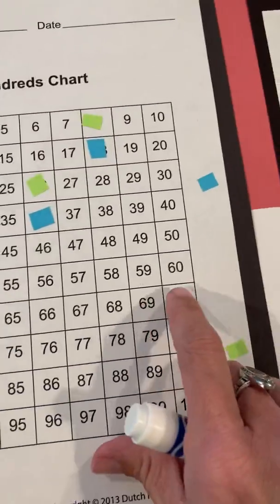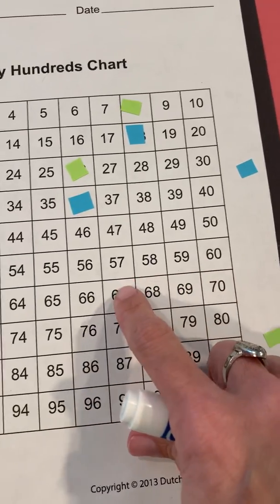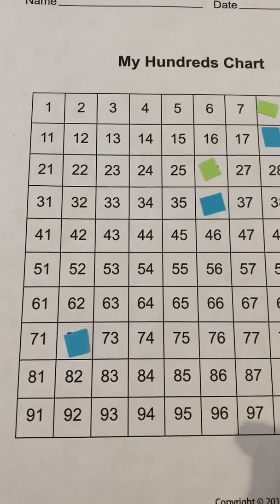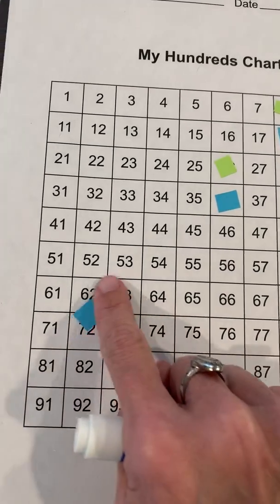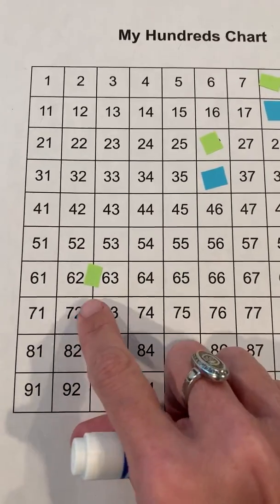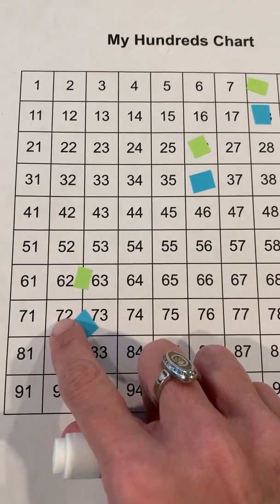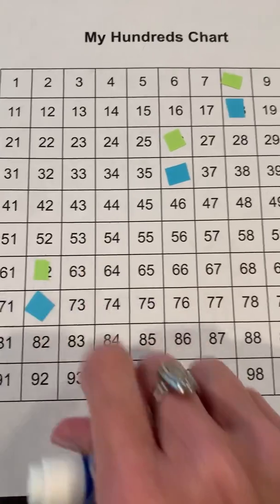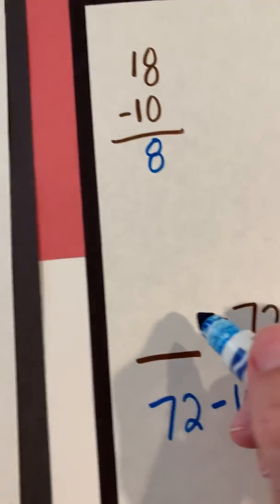So one, two, three, four, five, six, seven, eight, nine, 10. So from 72 to 62. And then let's look. Look at what the ones place is and look at what's happened to the tens place. So we have a difference of 62.